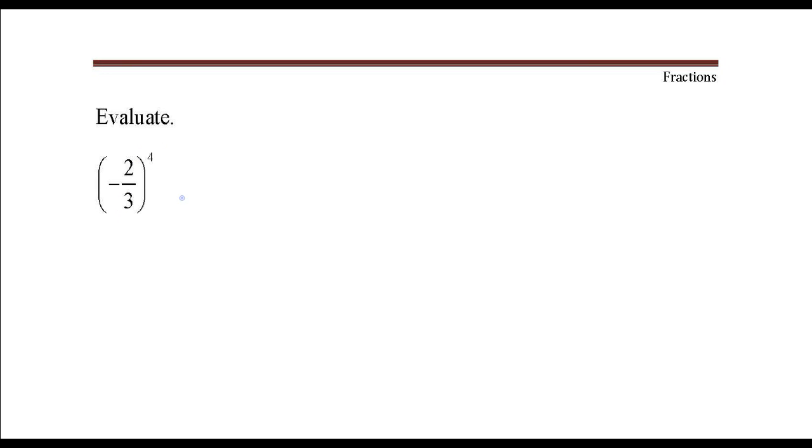Negative two-thirds raised to the fourth power - that's just repeated multiplication of negative two-thirds. So I'm going to rewrite this expression as negative two-thirds times negative two-thirds times negative two-thirds times negative two-thirds.